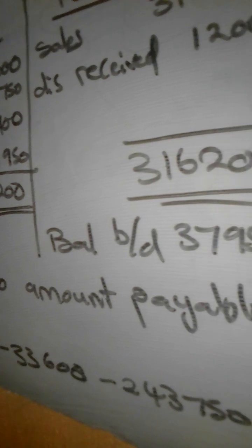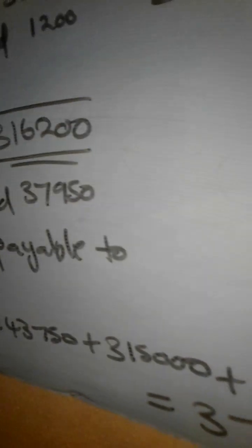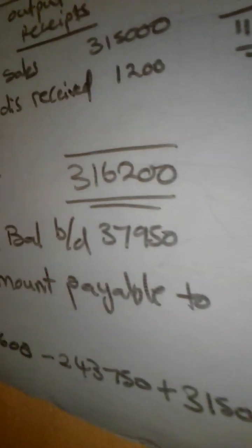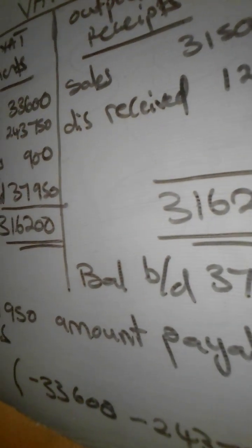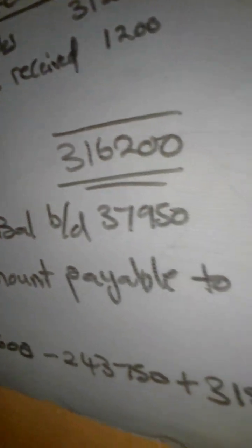That is all for the VAT calculation. Remember it is very important to identify the output VAT and the input VAT. The moment you understand what items make up output VAT and what makes up input VAT, it will never be a problem for you to get the amount that is payable or receivable to SARS. Thank you.